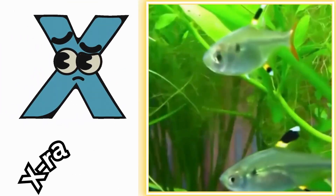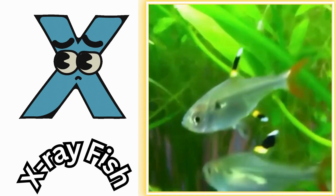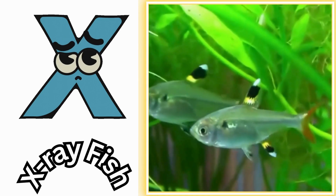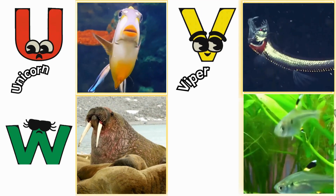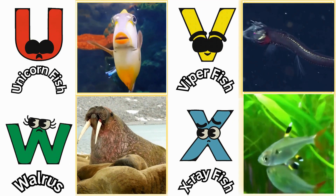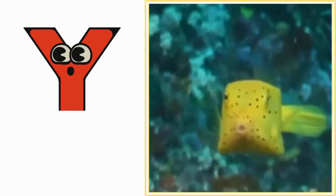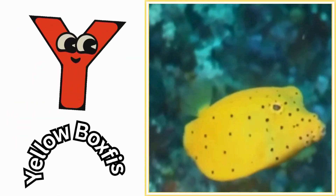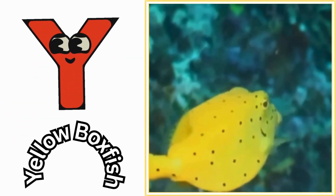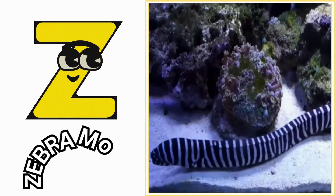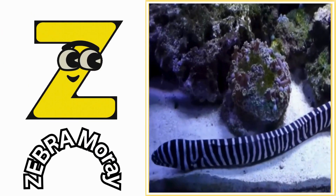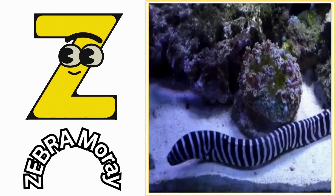X is for x-ray fish. Z, x-ray fish. Y is for yellow boxfish. Yuh, yellow boxfish. Z is for zebra moray. Z, zebra moray.